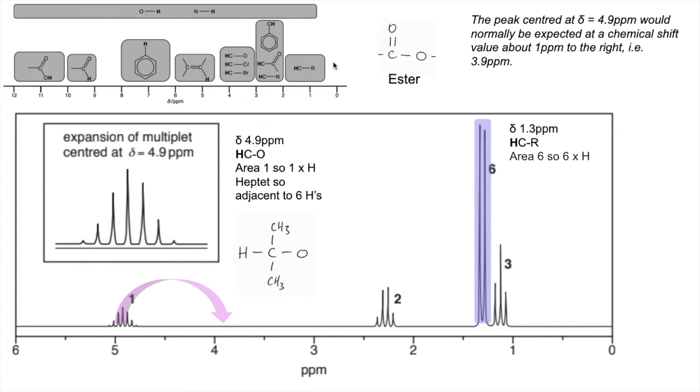The area is 6, so there's 6 hydrogens in the environment. That's tying in nicely with what we've said about the peak furthest to the left. The doublet means it's adjacent to 1. So you can see how that all fits together. This doublet peak is being caused by these protons here, and the heptate is being caused by this proton here.